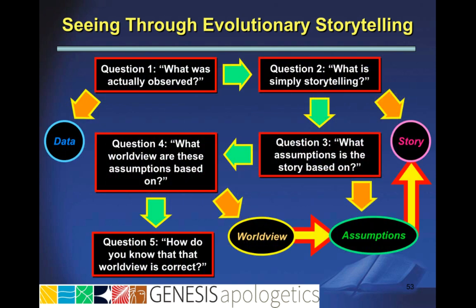So now that we've gone through these five questions, you can see that evolutionary stories are built on certain unprovable assumptions that are based in their worldview. And when we really dig deep, we find that the naturalistic worldview that the evolutionary stories are based on is not true. Therefore, the assumptions that the story is based on are not true, and the story itself is not true. We're left with just the raw data, which we can then look at through a biblical worldview and determine what the truth is about these things.